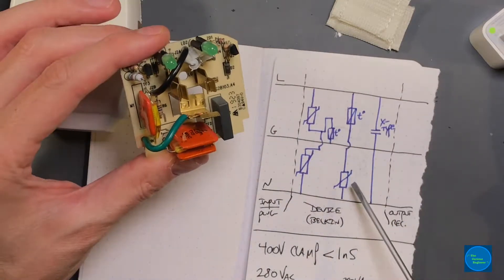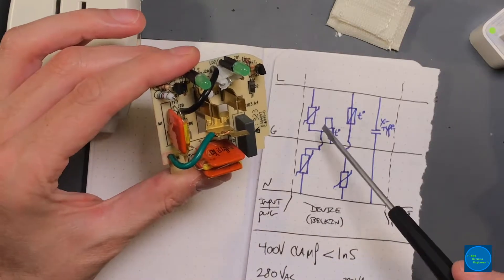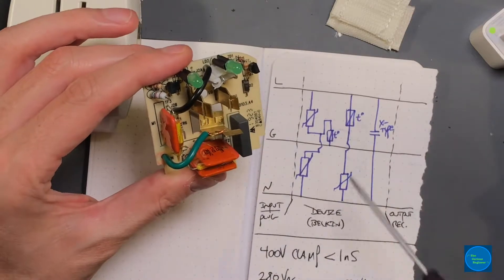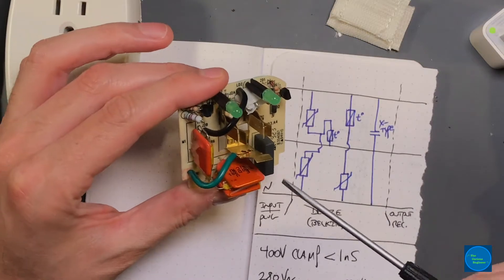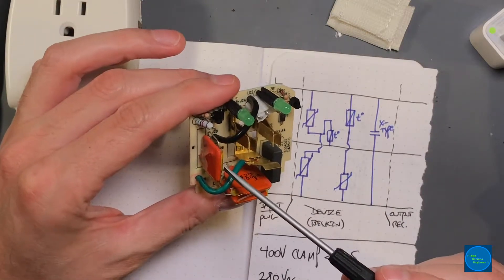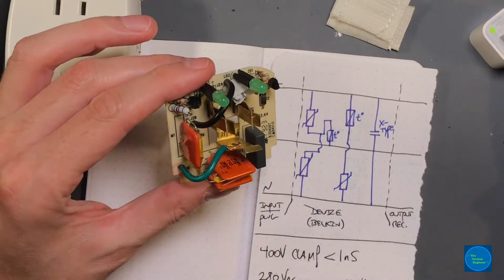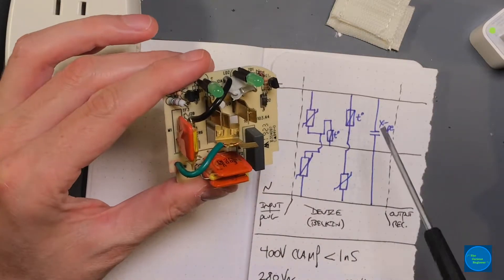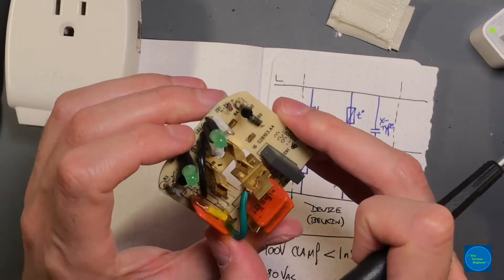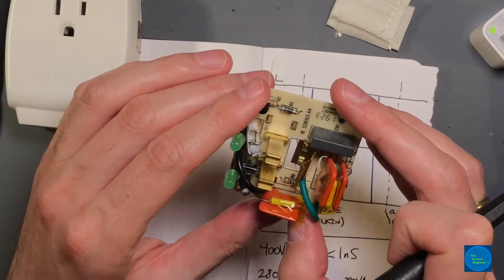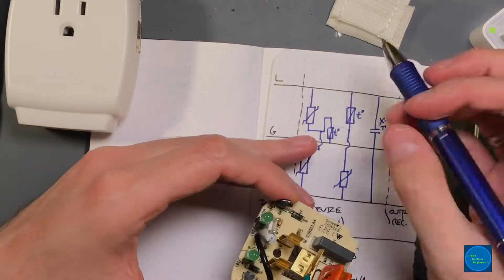That is in the event of any sort of fault where the MOVs fail. The known failure mode of MOVs is short, so they'll fail short. And always before that happens, they get very hot because their impedance drops as they age. But that'll be a topic for a future video. Then the fuses open up. These are rated at 115 degrees Celsius. Basically, that's the operation.